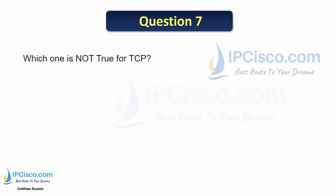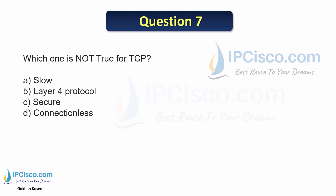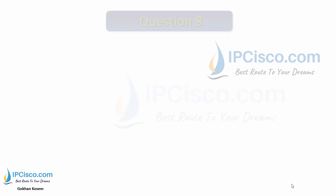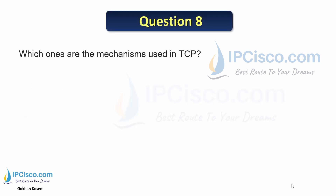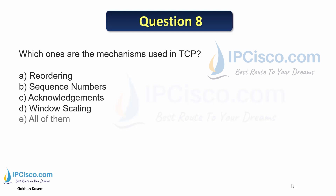Question 7: Which one is not true for TCP? The options are: slow, layer 4 protocol, secure, connectionless, and reliable. TCP is a connection-oriented protocol, so the answer is D — connectionless. And the final question: which ones are the mechanisms used in TCP? The options are reordering, sequence numbers, acknowledgements, window scaling, or all of them. All of these mechanisms are used by TCP.